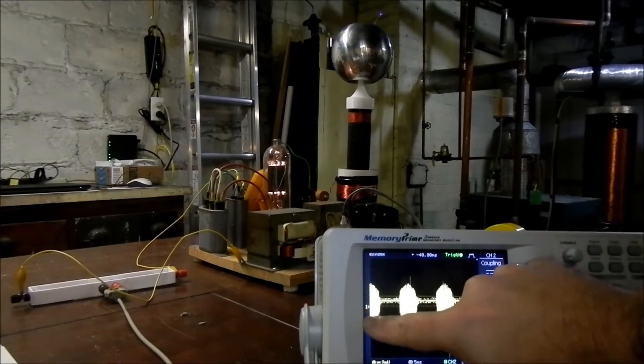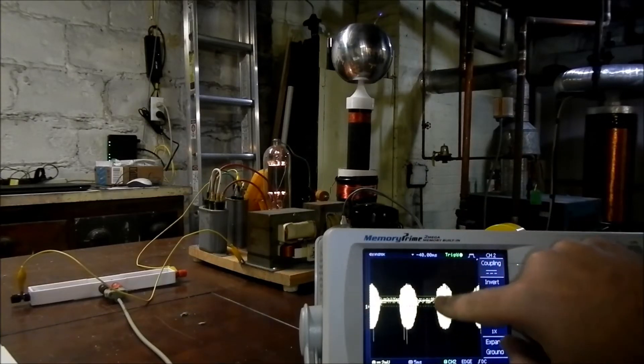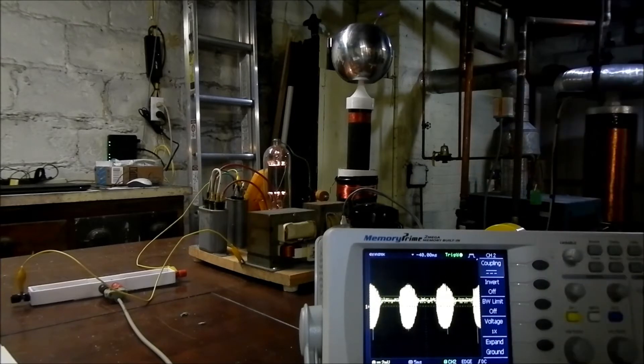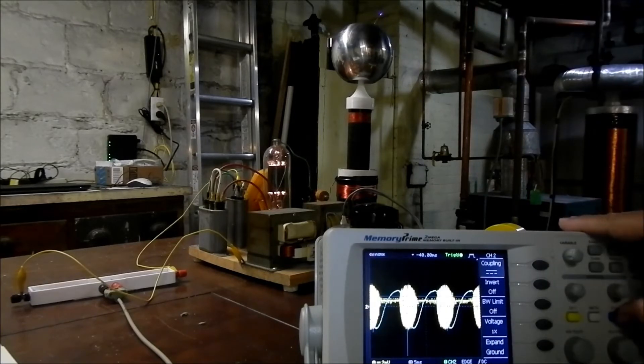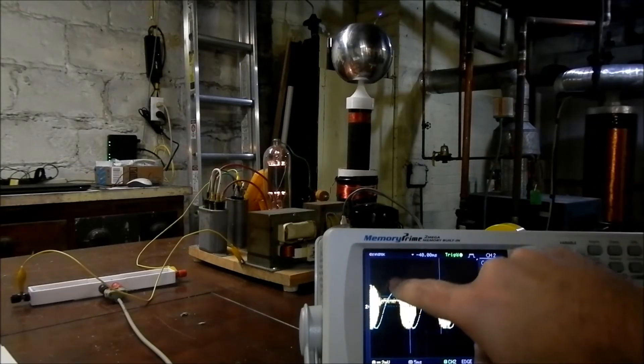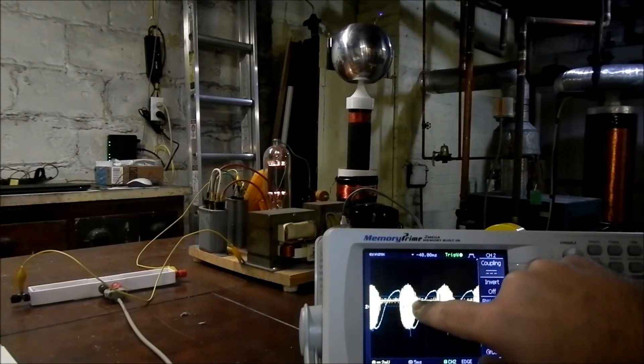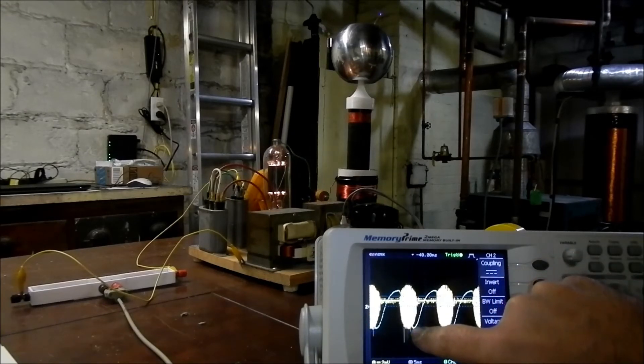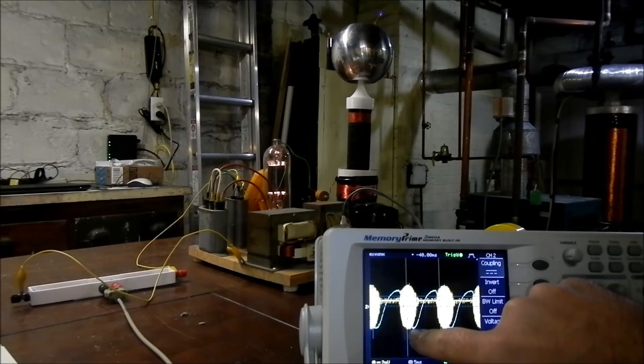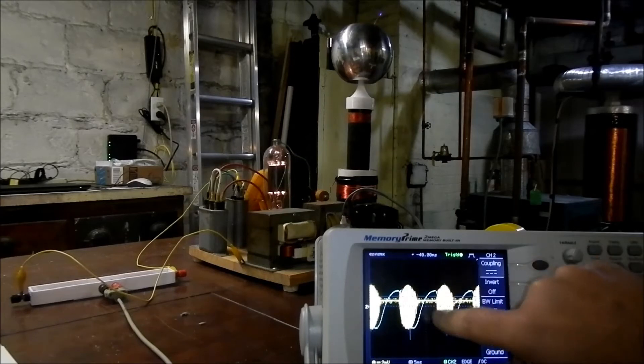And this is the pulsed RF that's coming out of the Tesla coil. And you can see how at the peak of the AC power signal, the tube turns on, triggers the oscillator circuit, and then the oscillator stops when the caps in our circuit have been discharged, and then the cycle starts again.